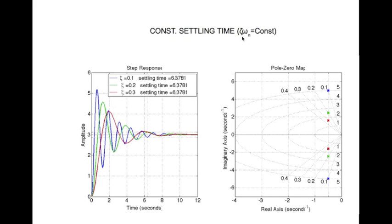Here we are looking at the product zeta omega n equal to constant, which means the distance of all three systems from the imaginary axis is the same — they are on the same vertical line. On the left hand side we have the three step responses. These are the 4% error bands. All three of them enter the error band at the same time: the red one enters here, the green one here, and the blue one here, and after that they remain within the error band. So they have the same settling time, which in this case is 6.3781 seconds, found from MATLAB.